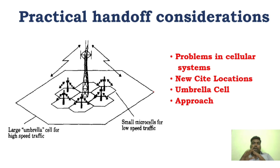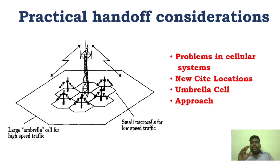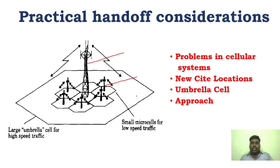Large antennas create large cells that support high-speed customers, and small antennas create small cells that support low-speed users. By using large-size antennas and small-size antennas, we can segregate the cell side. The large cell covers high-speed users, and the micro cells (small cells) cover low-speed users. This approach is called the umbrella approach.